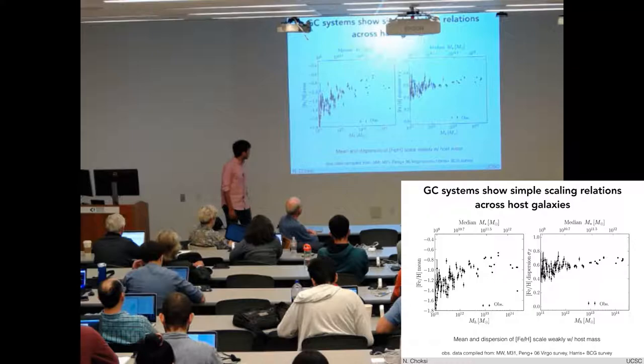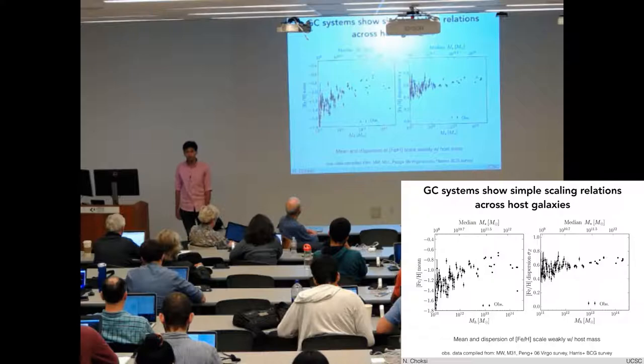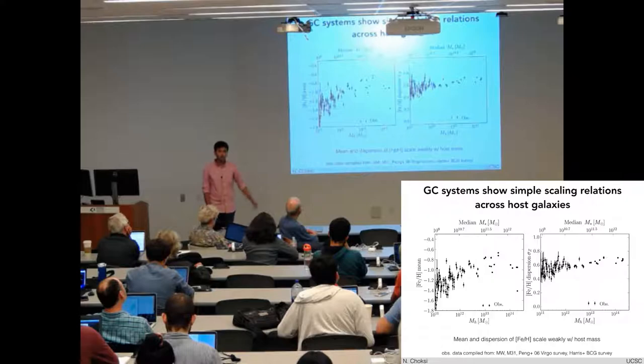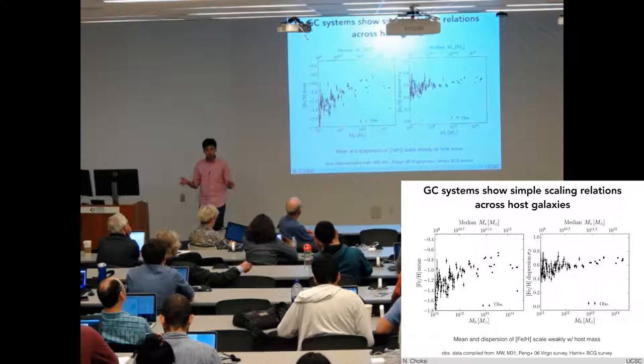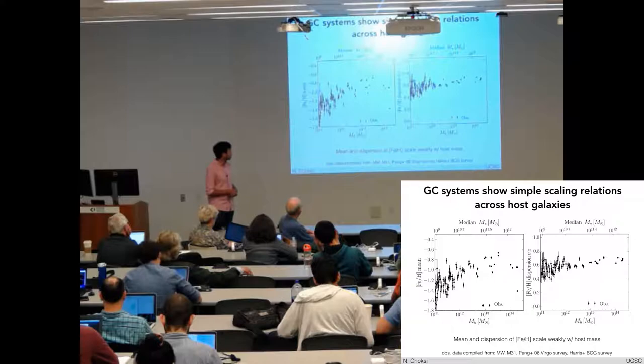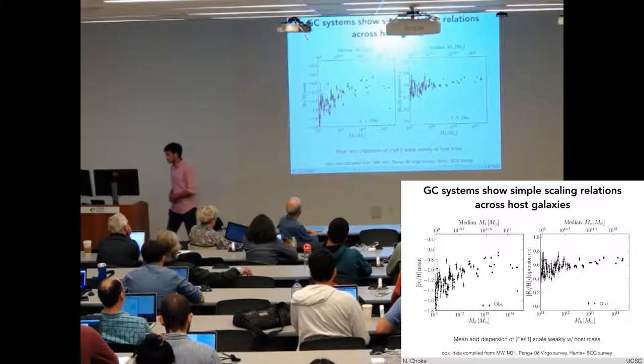Here are two, which I think are not advertised as often, but I think are also interesting. On your left, is the mean metallicity of all of the clusters within a given galaxy, plotted as a function of the host halo mass. And on the right is the dispersion in metallicities, the width of that histogram, and both scale weakly with the host halo mass, or stellar mass.